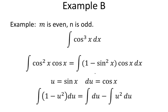Here's an example of m being even and n being odd: the integral of cosine cubed of x. You can break it up into cosine squared times cosine to the first. By substituting cosine squared of x for 1 minus sine squared of x, we make the substitution u equals sine of x, ending up with 1 minus u squared, and du equals cosine of x. The integral turns into two much simpler integrals.